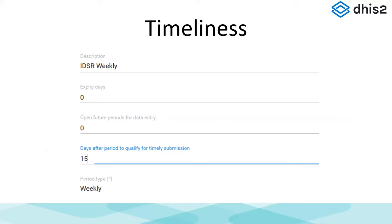For timeliness, DHIS2 has a really good tool if you're reporting aggregated data — it's in the data set configuration. You can set the number of days after the period to qualify data as timely. For example, you can set 15 days, meaning data must be entered within 15 days of the previous period to be considered timely. If entered after that 15 days, it's considered late. You can either disallow late entry or allow it but flag it for follow-up.